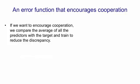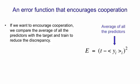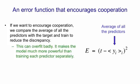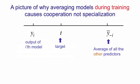So if you want to encourage cooperation, what you should do is compare the average of all the predictors with the target and train all the predictors together to reduce the difference between the target and their average. So using angle brackets for expectations, the error would be the difference between the target and the average over all the predictors of what they predict. That will overfit badly. It will make the model much more powerful than training each predictor separately because the models will learn to fix up the errors that other models make.